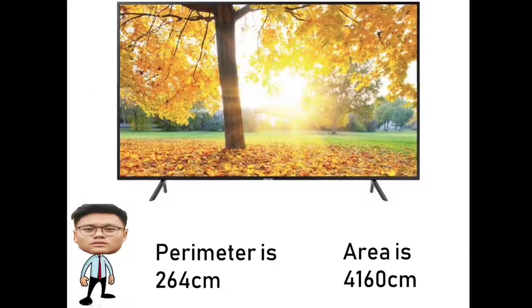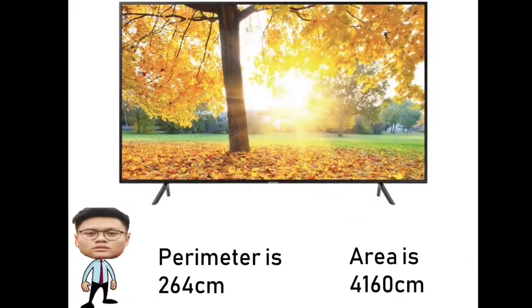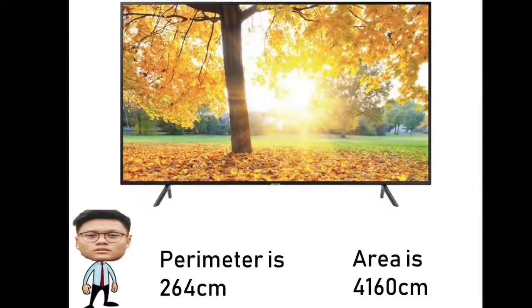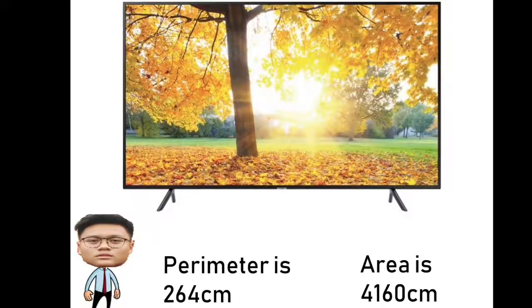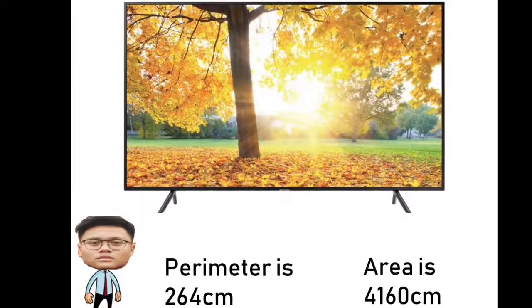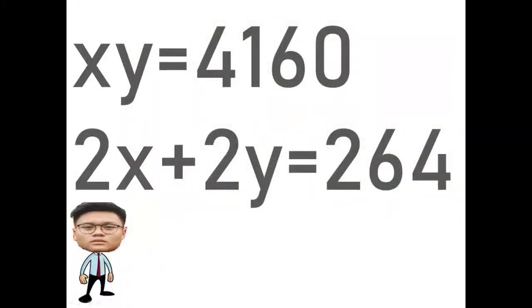So we have here our television. Its perimeter measures 264 centimeters and its area measures 4160 centimeters. We should replace the variable of the formula of the perimeter and area of a rectangle. Our first equation is xy=4160 while the second equation is 2x+2y=264.